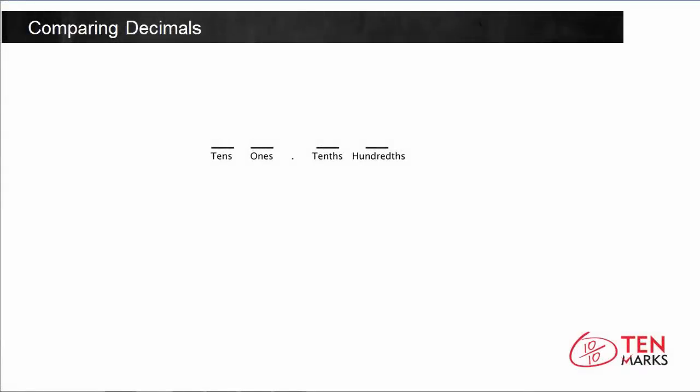In this lesson, you will learn how to compare decimals. A decimal number includes a decimal point. Below, I have a place value table that shows the decimal places. Directly to the right of the decimal point is the tenths place. To the right of the tenths place is the hundredths place.